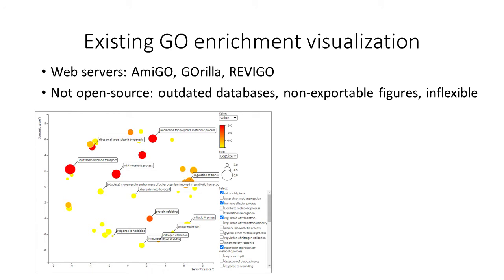Several enrichment visualization software tools have been developed that are able to summarize the biology behind these analyses and make it interpretable for the user. Some of the more popular ones are Amigo, Gorilla, and Revigo. Revigo especially has been popular — it uses semantic similarity analysis, grouping functionally similar gene ontology terms together, and it produces an easy-to-interpret visualization of your GO enrichment analysis.